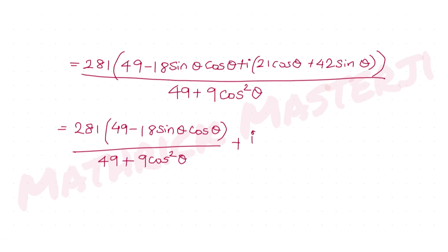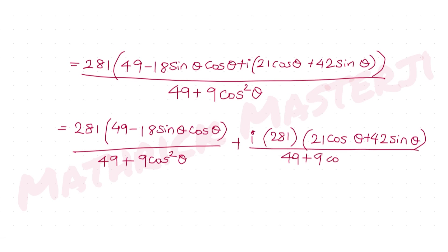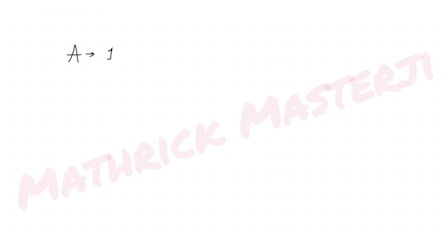So I now have the expression in the form of real part plus imaginary part. The imaginary part is 281(21 cosθ + 42 sinθ) / (49 + 9cos²θ). The question tells me that set A contains exactly one positive integer n, which means the expression must be purely real — the imaginary part must equal zero.